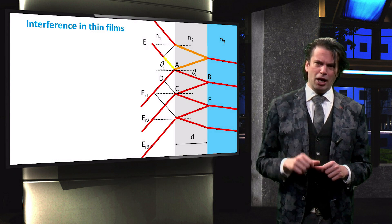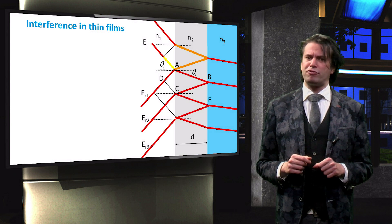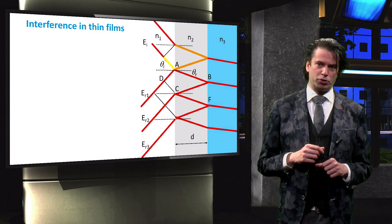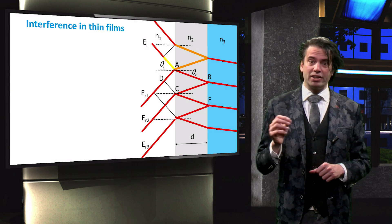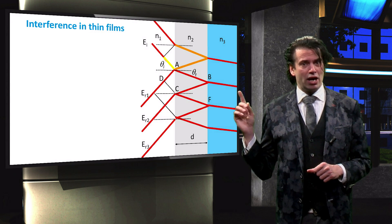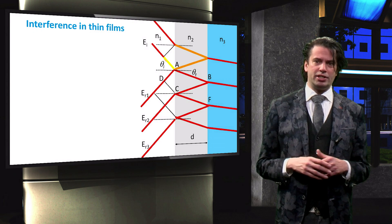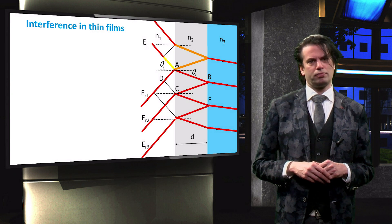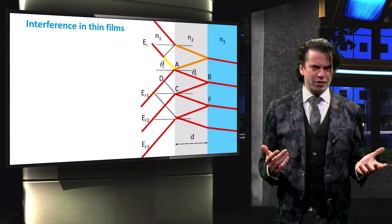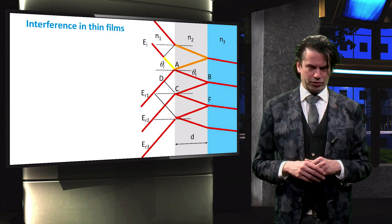At point G both incident light beams have travelled equal distance from the source. The path length of wave 1 is indicated by the yellow line, while wave 2 is indicated by orange. For convenience sake we will collapse the incident waves.